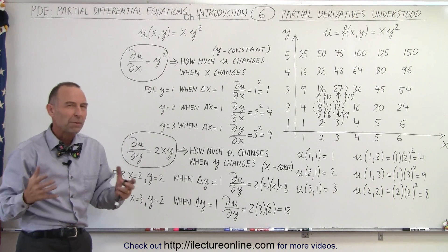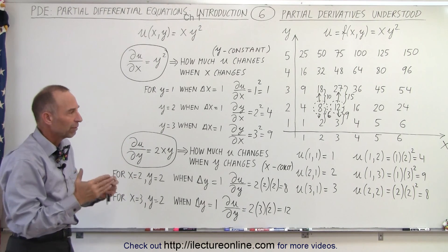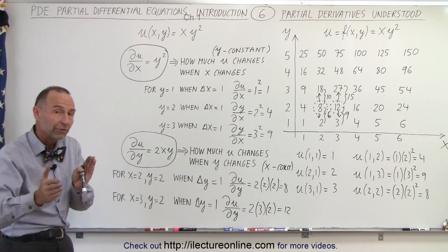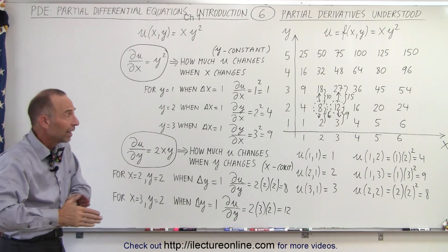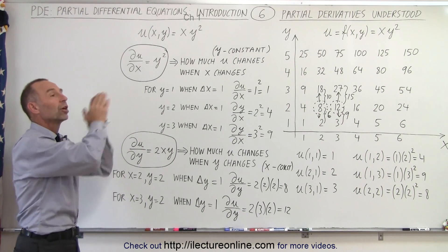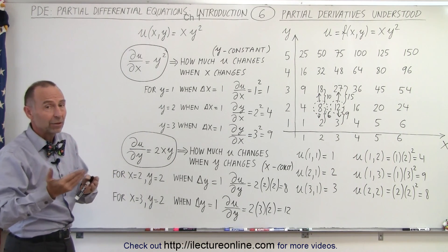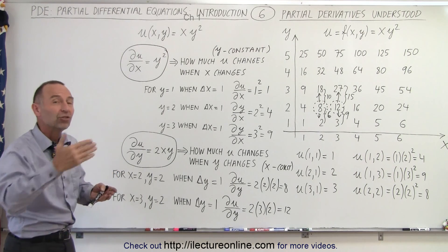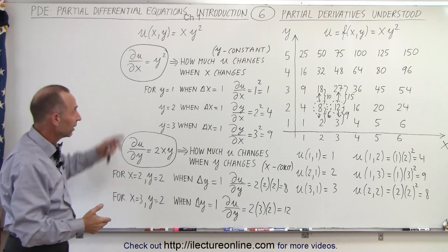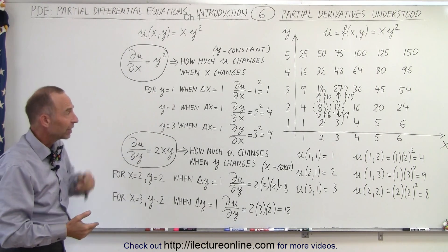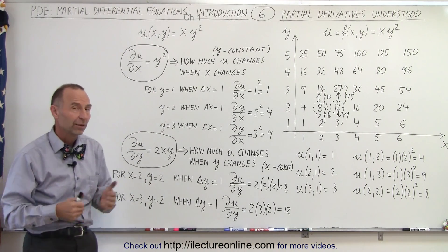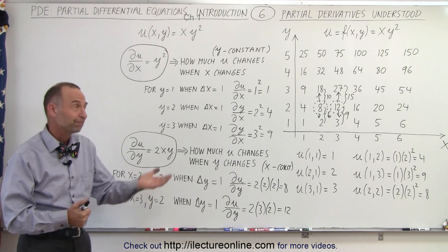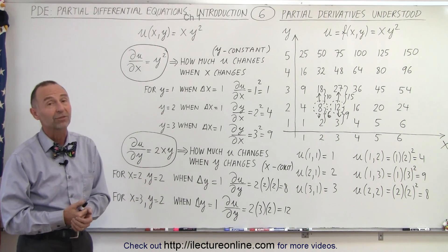And that's what we mean by partial derivatives. If we change one independent variable and leave the other constant — keeping x constant means moving up or down; keeping y constant means moving left or right — the resulting change in the function matches the partial derivative of u with respect to that variable. That's how we graphically illustrate and understand partial derivatives.